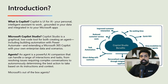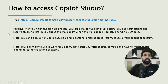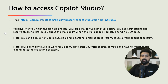Now that we understand Co-Pilot Studio, agents and Co-Pilot, let's move further to how you can use this tool and build your own agent. To build your own agent, you would require this particular tool to be installed. You can enable a trial version which is valid for 30 days. For enabling this trial version, you would require a work or school account. You cannot use your Gmail or Outlook personal account for activating this.